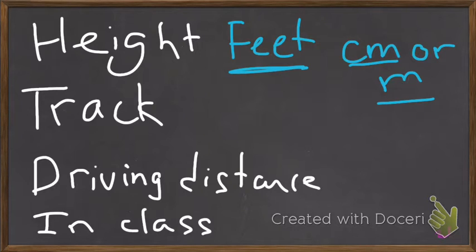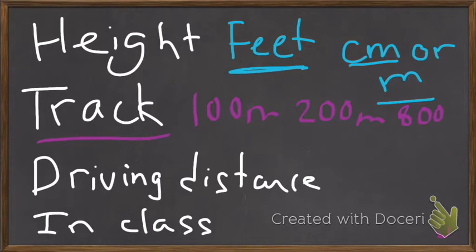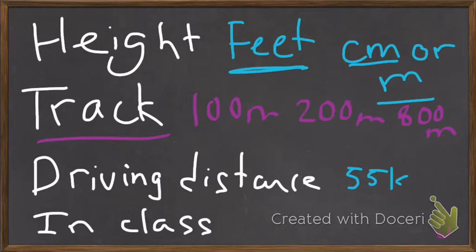Other things we can measure: we measure tracks and distances. So if someone is running track and field, or maybe during the Olympics or any sporting events, we'll measure tracks — things like the 100 meter dash, 200 meter, or something even longer like 800 meter. We also like to measure our driving distances. My commute, meaning the distance from my house to our school, Our Lady of the Lake, is about 55 kilometers, which is pretty far. We wouldn't measure our height in kilometers, and we wouldn't measure our driving distances in centimeters. So we always want to use the right measurement and the right units for each object and distance.